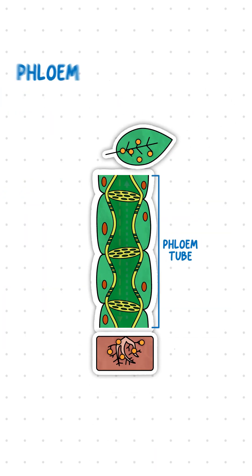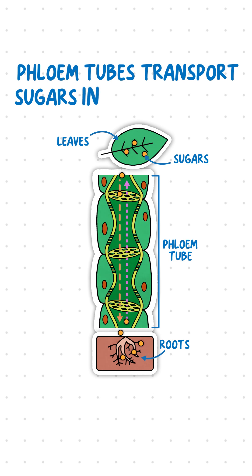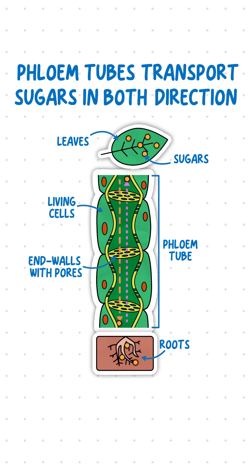In contrast, phloem tubes transport dissolved sugars from photosynthesis in both directions. Unlike xylem, they are living cells with end walls that have pores for the movement of cell sap.